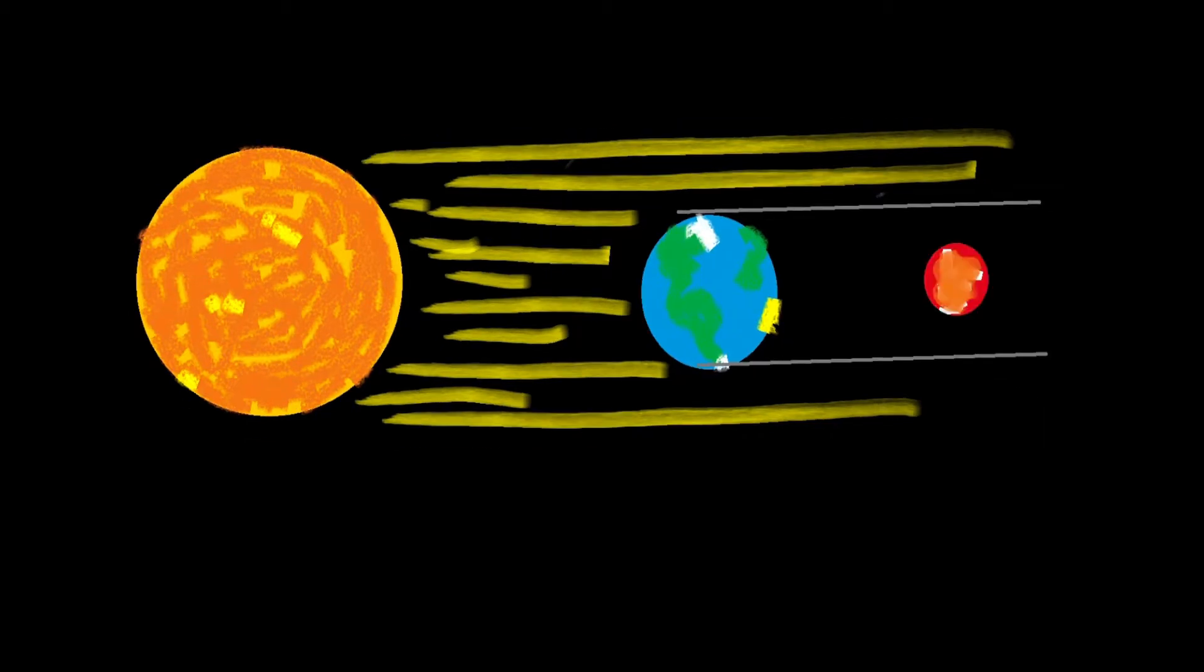A lunar eclipse is when the Earth's moon enters the Earth's shadow, and thus, when in totality, the moon turns a blood red.